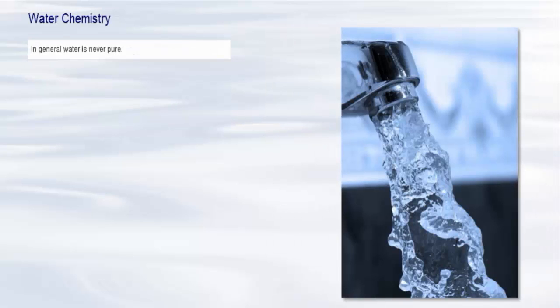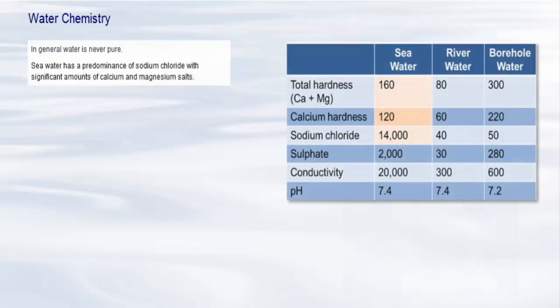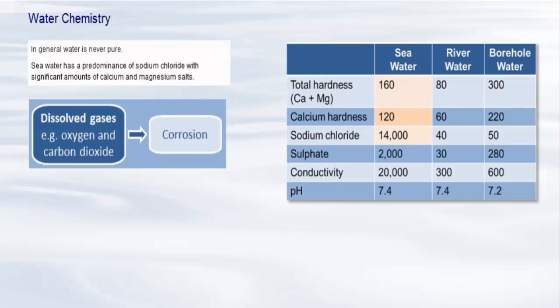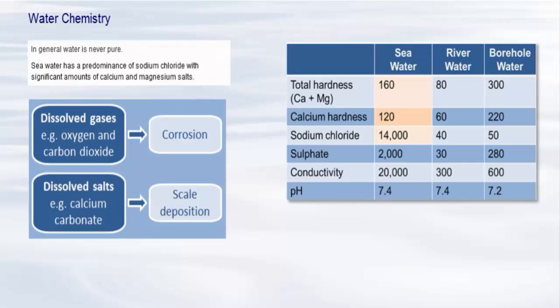In general, water is never pure. Normal tap water contains a number of constituents that are important and beneficial to our constitution. The table shows that seawater has a predominance of sodium chloride with significant amounts of calcium and magnesium salts. When introduced to marine steam boilers or engine cooling systems, these constituents will cause operational problems if not removed. For example, dissolved gases such as oxygen and carbon dioxide will cause corrosion, and dissolved salts such as calcium carbonate will lead to scale deposition. As we will see, corrosion and scaling are serious problems if not controlled.